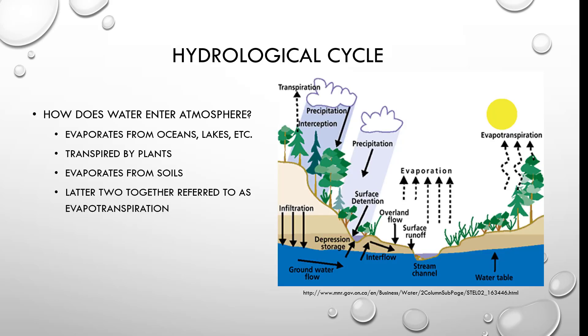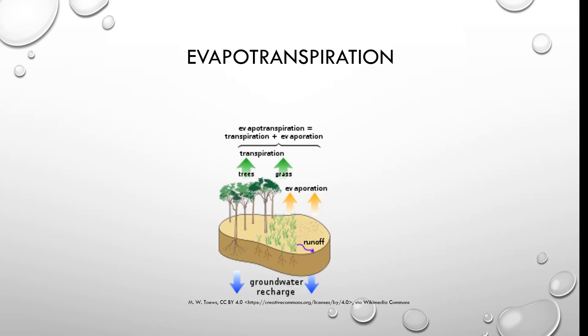The water cycle, or hydrological cycle: water enters the atmosphere through evaporation from oceans and lakes, and is transpired by plants and evaporated from soils. The combination of transpiration and evaporation is called evapotranspiration. Here's a graphic showing trees and grass that are transpiring, while bare soil is evaporating unless it's running off.